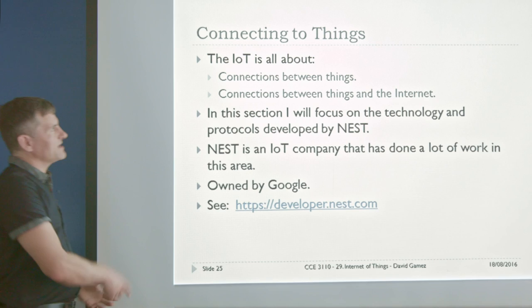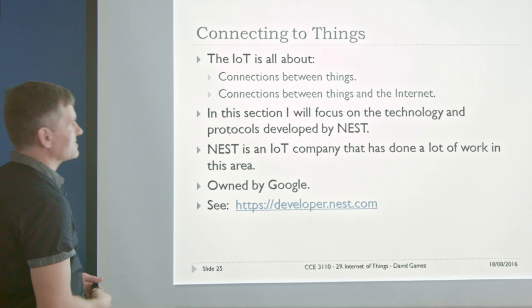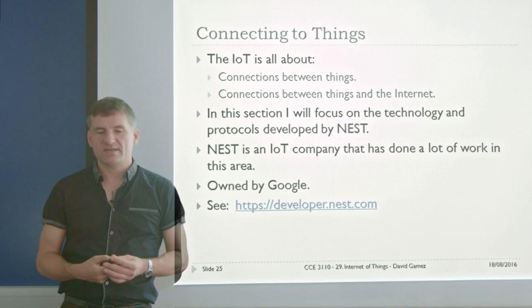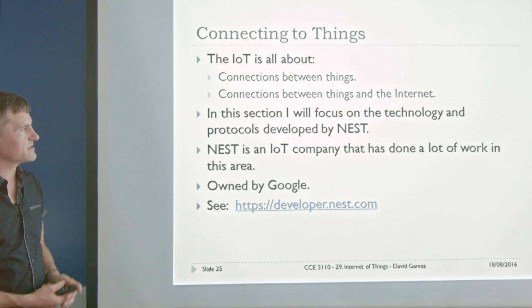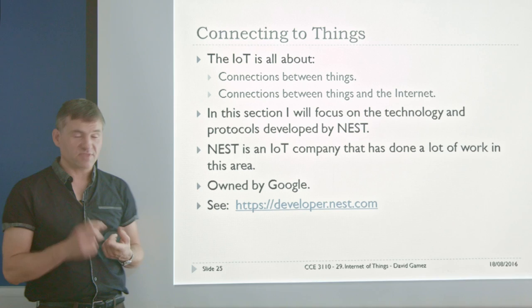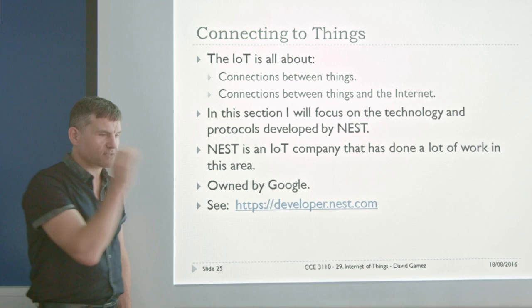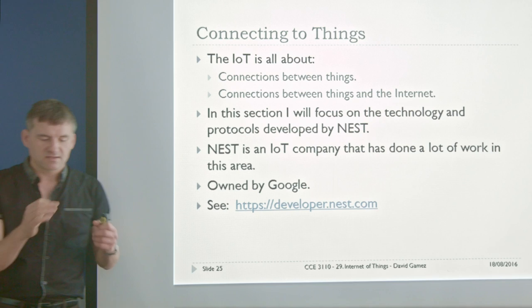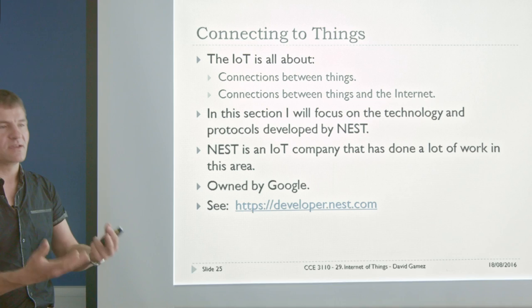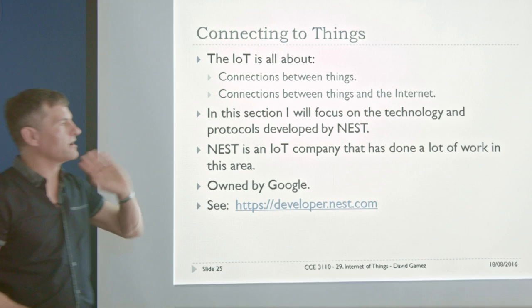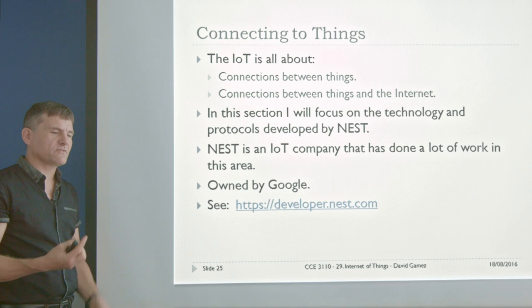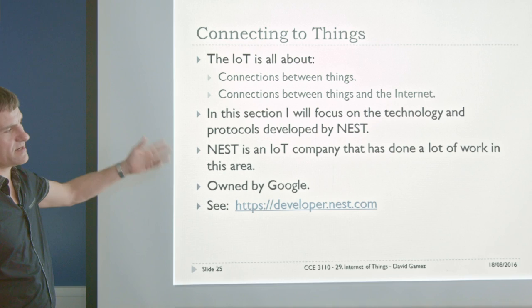The Internet of Things is all about connections between things and connections between things and the Internet. I'm going to focus on protocols and technology developed by Nest. There's lots of different companies competing with competing protocols, but I'm picking Nest because they do some very nice things. Their thermostats are super slick and very popular. They've also got a smart smoke alarm. Nest have done a lot of serious hard technological work on designing protocols and power-efficient communication between devices. They were bought by Google a few years ago, and you can completely see why.